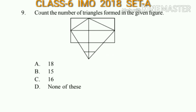Question number 9: Count the number of triangles formed in the given figure. Looking at the figure carefully and counting the triangles, the answer will be option A, that is 18.